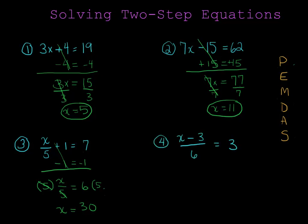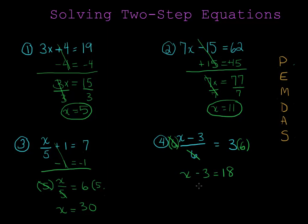In my last problem there's a slight twist, because there's a subtraction problem trapped inside the numerator of this fraction. In order to do this problem I first have to get rid of the divide by 6, because I can't touch the subtraction until I've cleared the fraction. I'll get rid of that by multiplying by 6 on both sides. Multiplying the left side by 6 clears the fraction and I'm left with x minus 3 is equal to 18. Now I can get rid of this minus 3 by adding 3 to both sides, and I get x is equal to 21.